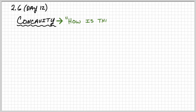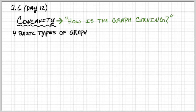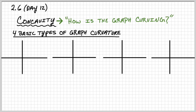So in general, it just means how is the graph curving? I guess the root word you think of is 'caving.' And there are four basic types of graph curves that we'll look at. So, four basic types of graph curvature.